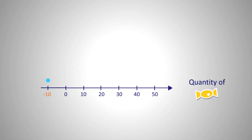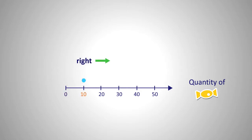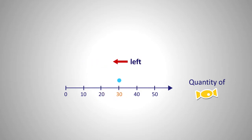But negative 10 sweets doesn't really make sense in economics. So we can drop the negative region of this number line and just start from zero. What else do you notice? You realize that as you move to the right, the number gets larger, and when you move to the left, the number gets smaller.